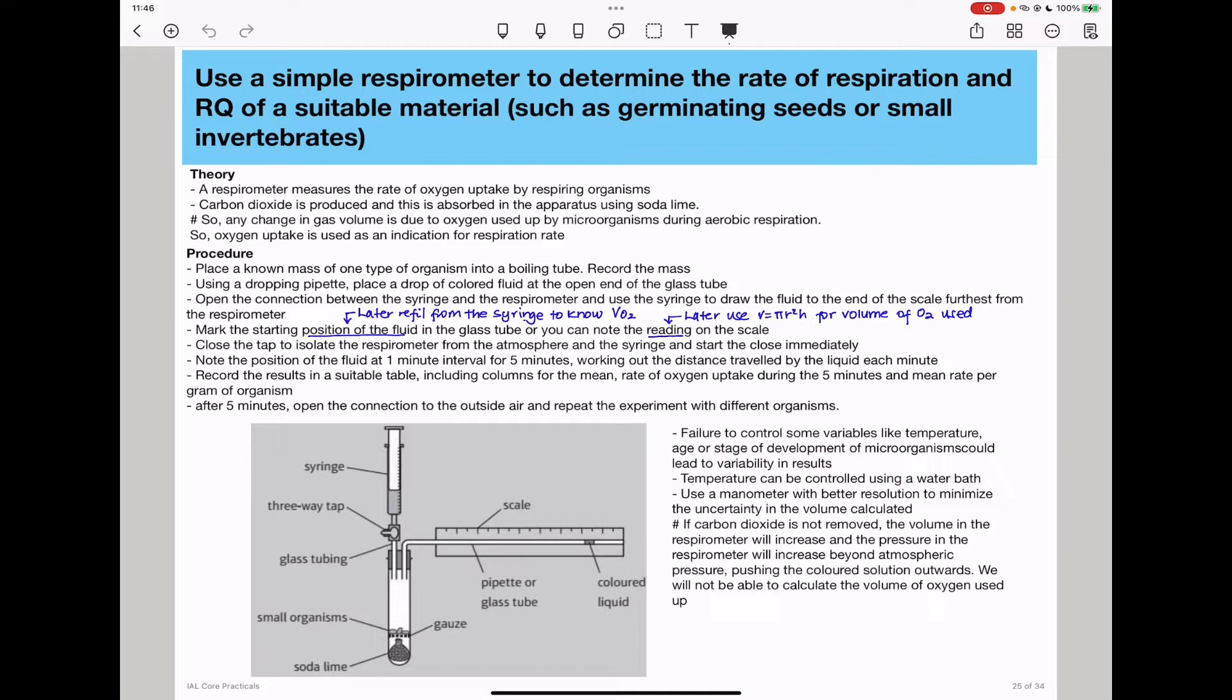There are two methods you can use to determine the volume of oxygen used up. Either you can open this tap so that more oxygen comes in to return the colored solution to its original position, and then look at the syringe to know how much volume has been used to refill. That would be the volume of oxygen used up by the organisms within a specific time.